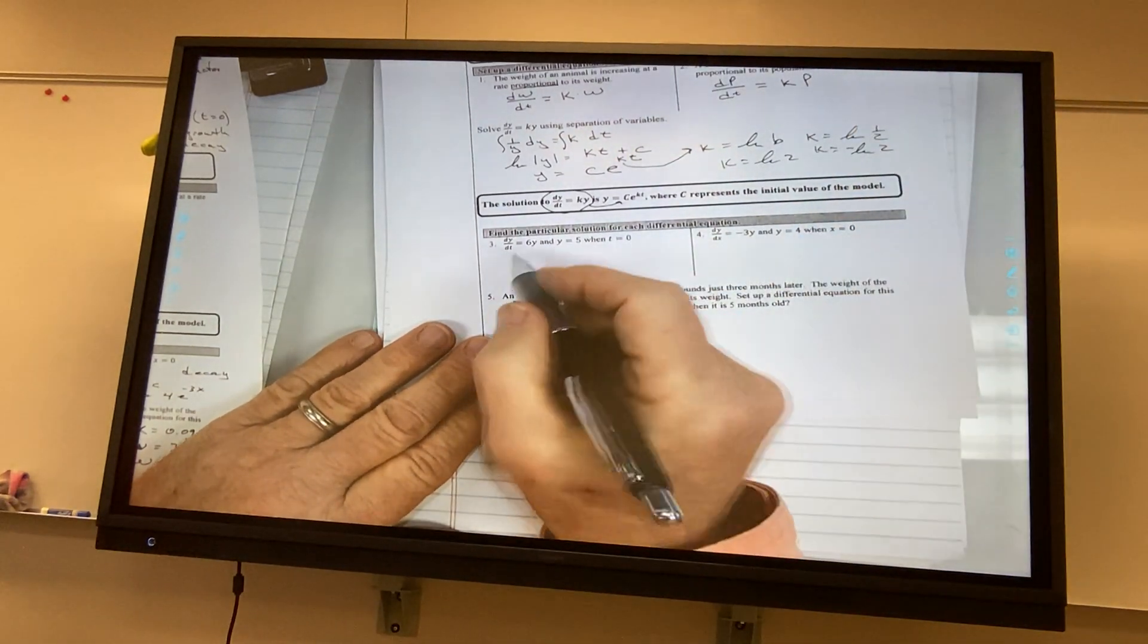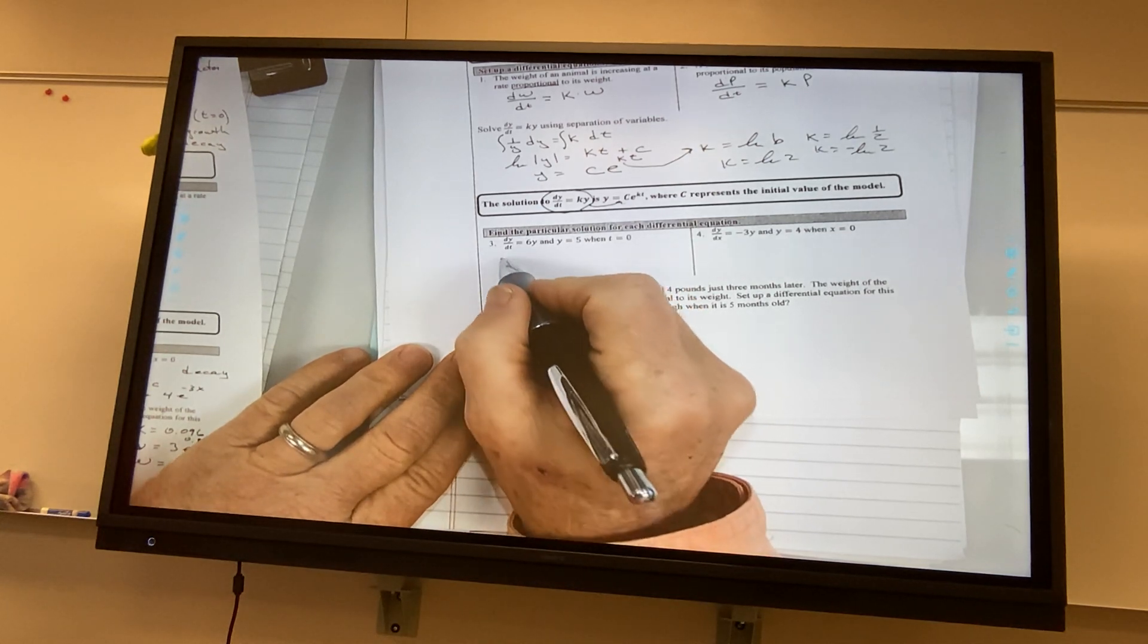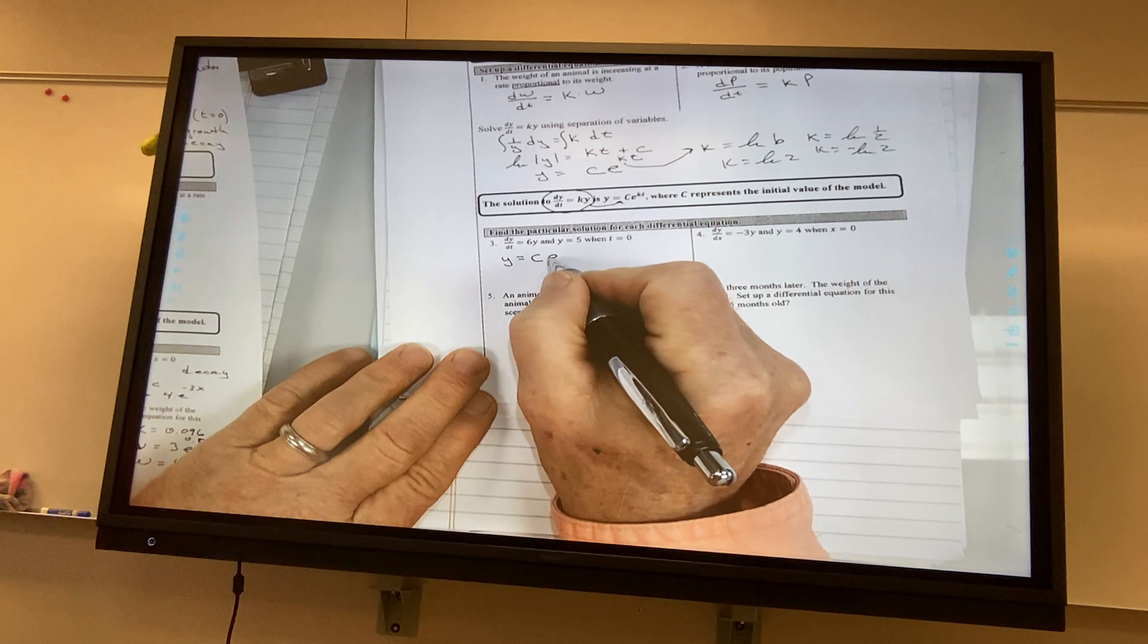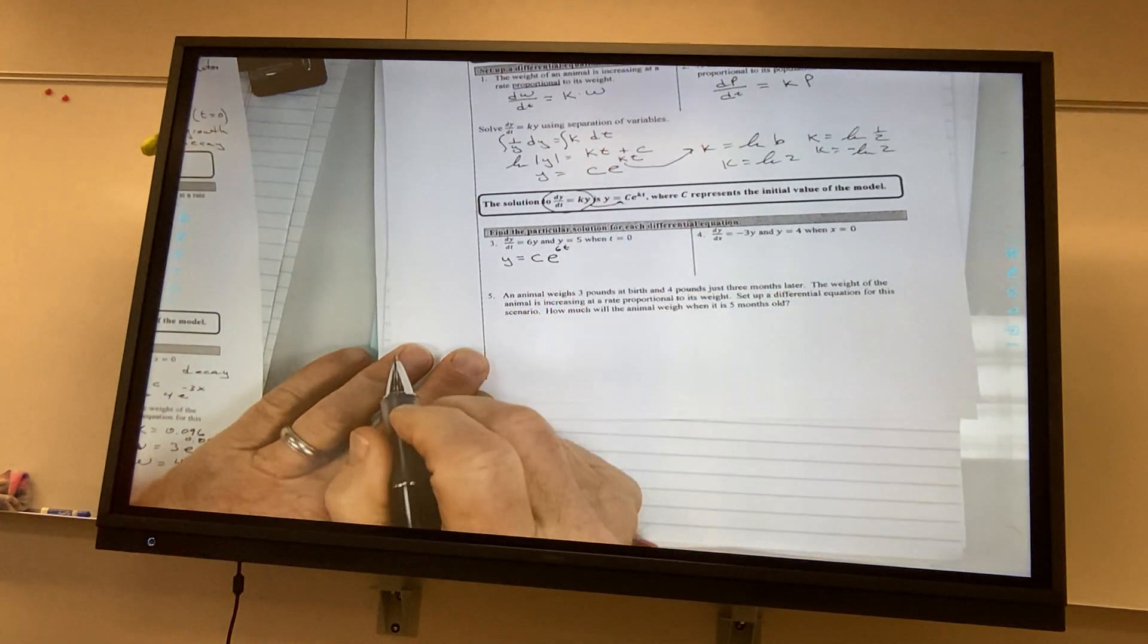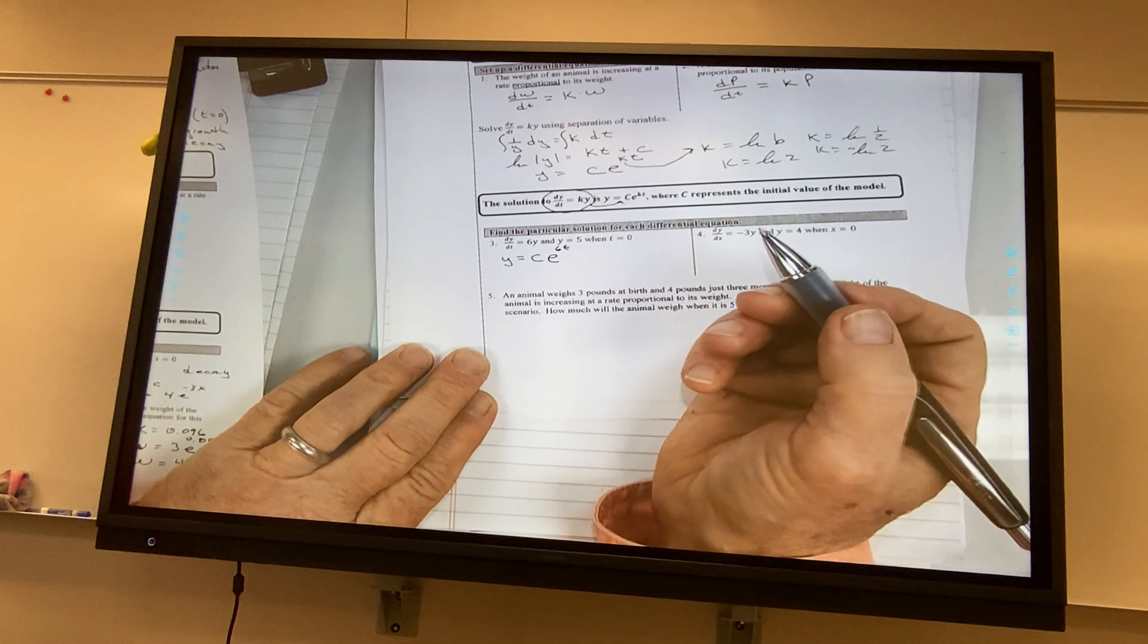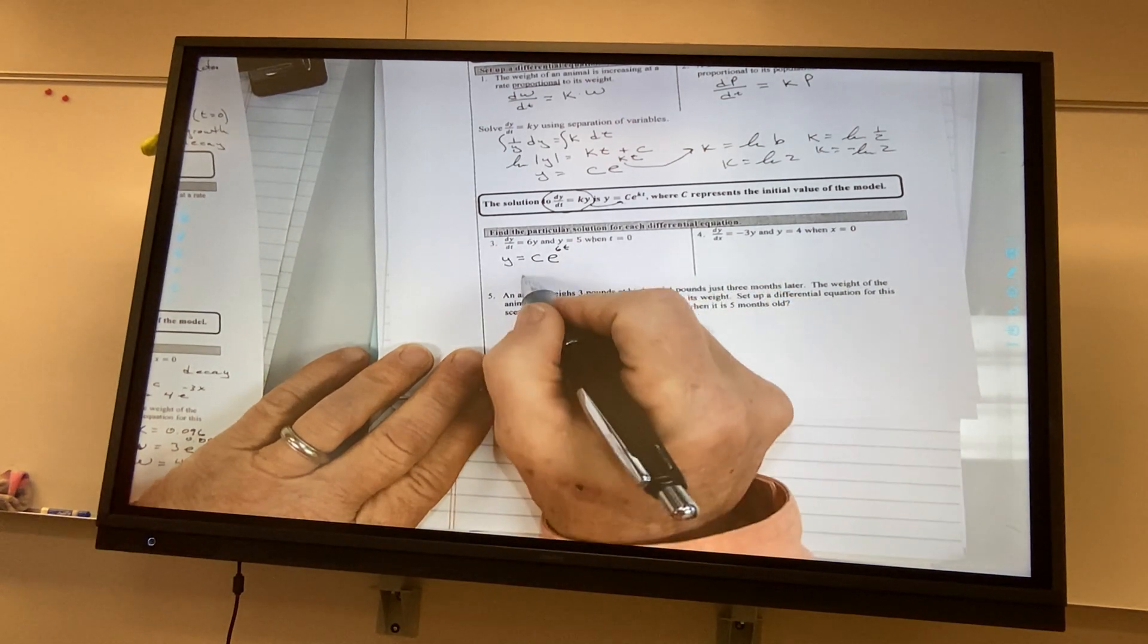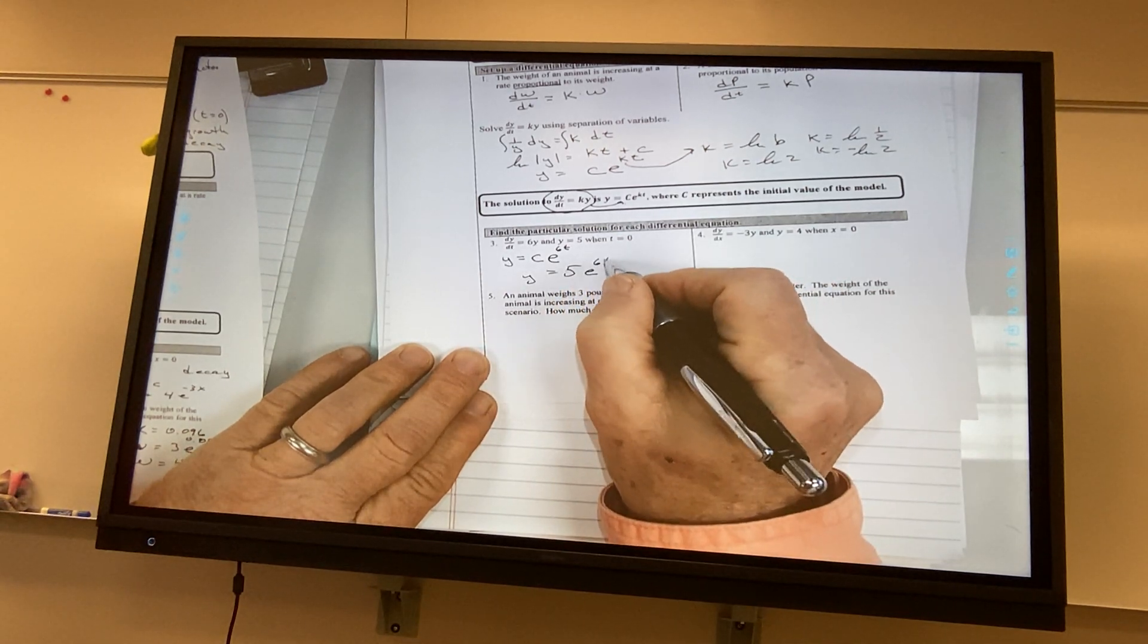So, you'll see these like this one right here. This one will be y equals c e to the 6t power. Think about that. I'll have 1 over y on this side. I'll have 6 dt on the right side. When I integrate, I'll have 6t plus c. So, right here, it says y is equal to 5 when t equals 0. So, my equation must be 5e to the 6t power.